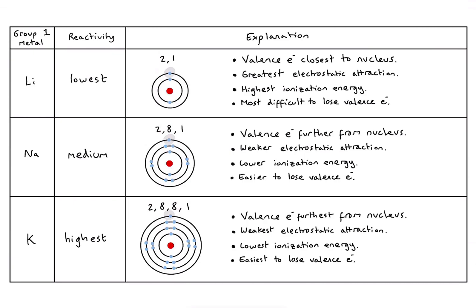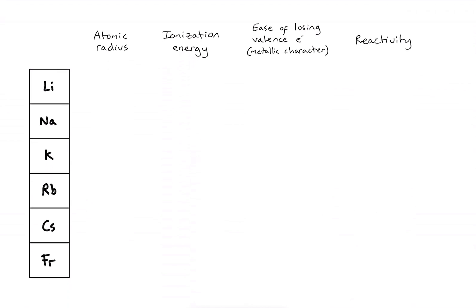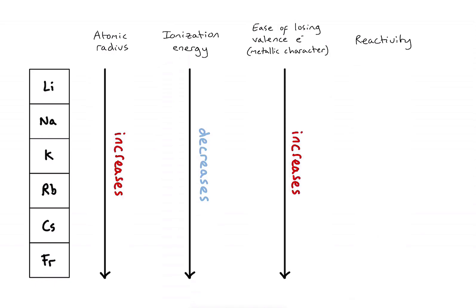So as a little summary, and we'll apply this now to the whole group 1, we can think about this trend of increasing reactivity being caused by increasing atomic radius. The atoms are getting bigger as they go down the group, which is why the ionization energy, or the energy required to remove that valence electron, is going to decrease. And that simply means that it becomes easier and easier to lose a valence electron. And that, you'll notice in brackets there, we've written metallic character. That's what we mean by metallic character: how easily does it lose its outer electron? And therefore, the reactivity down the group increases.